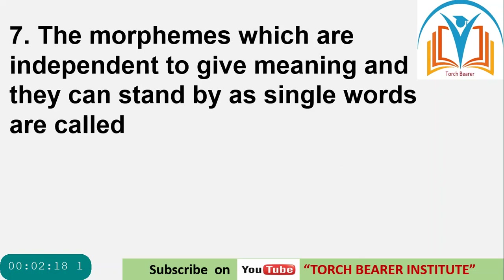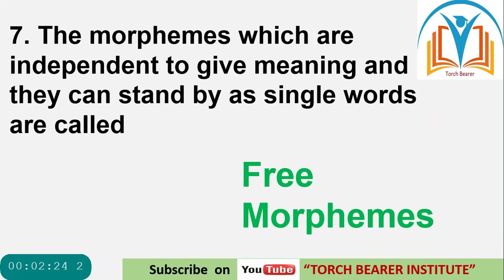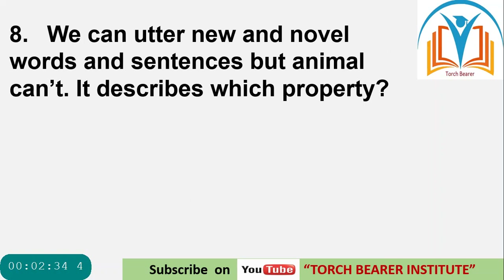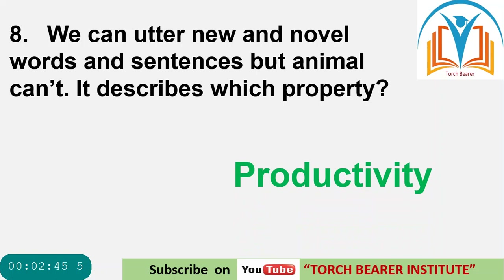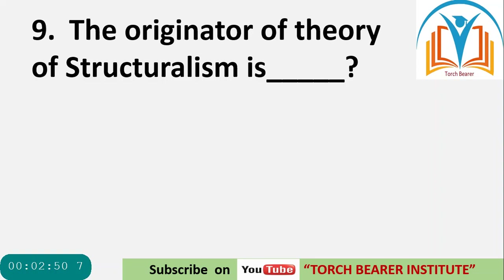Question 7: Morphemes which are independent, can carry meaning, and can stand alone as single words are called free morphemes. In a previous video we studied bound morphemes; this question is about free morphemes. Question 8: We can utter new and novel words and sentences but animals cannot — this describes the property of productivity.